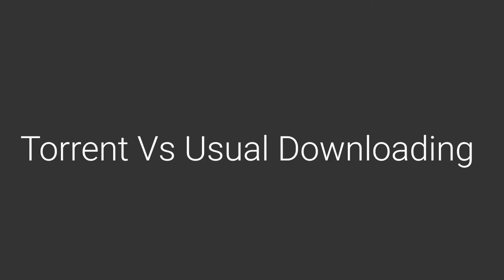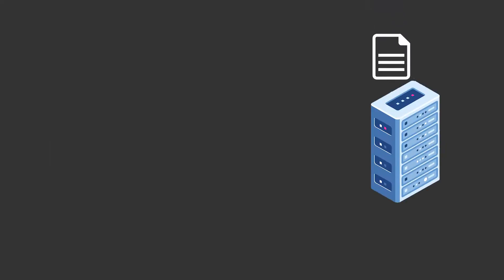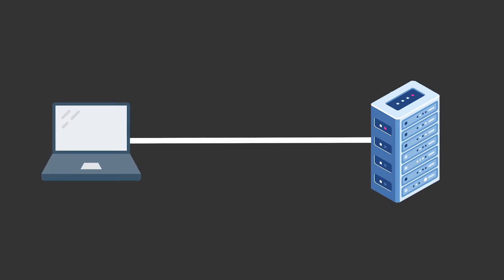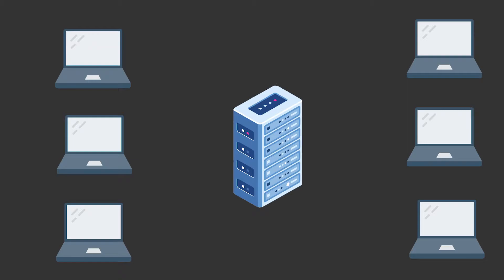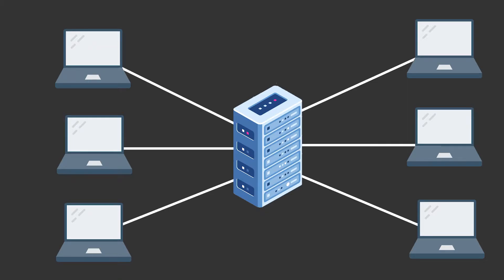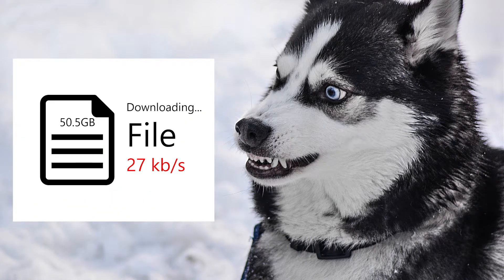To understand torrent, first let's see how a normal server works when you download a file from the internet. Usually the file is uploaded on a central server by a company or file provider, and your device connects to that server requesting the file. But because the file is saved on one server, if a lot of users try to download it at the same time, it can affect your downloading speed significantly — especially for large files.